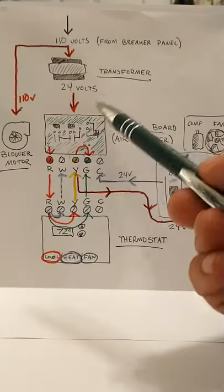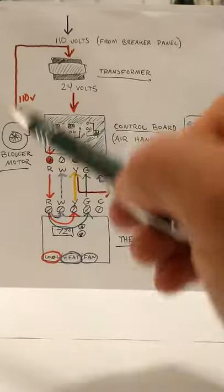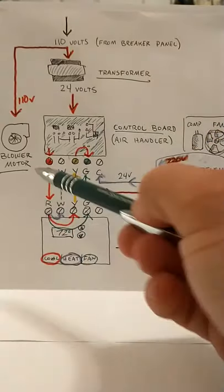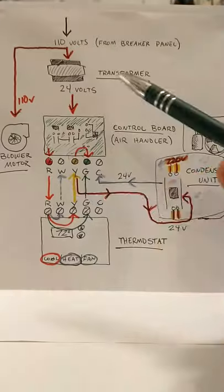And basically, you could just leave that jumper in there. It doesn't matter. That jumper just turns it into one single R terminal. And you still run your heating off your W and your Y.